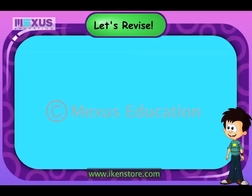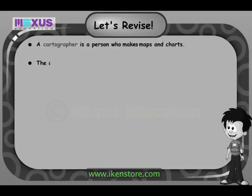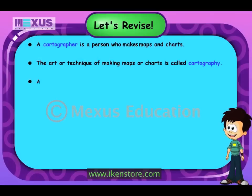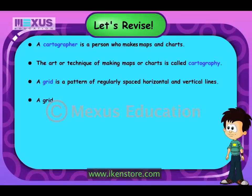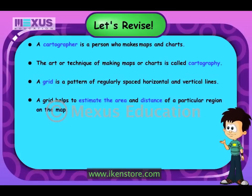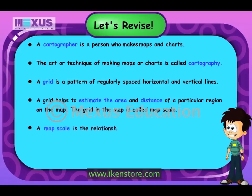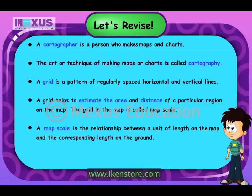Let's revise all about grids and map scales. A cartographer is a person who makes maps and charts. The art or technique of making maps or charts is called cartography. A grid is a pattern of regularly spaced horizontal and vertical lines. A grid helps to estimate the area and distance of a particular region on the map. The grid in the map is called map scale. Map scale is the relationship between a unit of length on a map and the corresponding length on the ground. A map scale is used to enlarge or reduce a map.